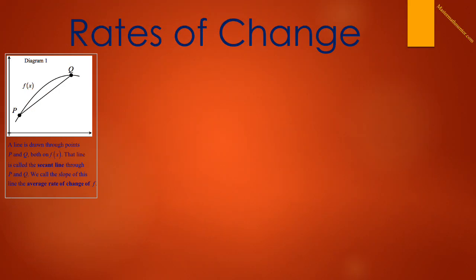We are given a curve f of x. We have two points on the curve, P and Q. We draw a line between those two points. We'll call that line the secant line through P and Q. The slope of this line will be called the average rate of change of f.